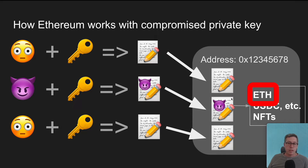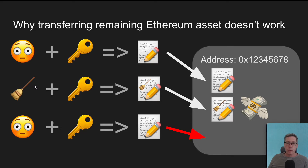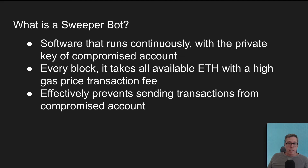The problem is that when they steal assets, they normally take all of the available ETH, which is necessary for paying transaction fees on the Ethereum network. After the initial theft, they transition to the next step of the scam: running a sweeper bot against your private key and Ethereum account. This is software that runs all the time, and its entire job is to take any ETH that lands in your account and steal it. Because you're no longer able to keep ETH in your account, you cannot send transactions even though you have the private key, because you cannot afford to pay the network fees even if you transferred them in just a minute ago. A sweeper bot runs constantly using the compromised private key, steals everything every block extremely quickly, and uses a very high gas price to prevent any delay in confirmation — effectively preventing you from accessing your account.